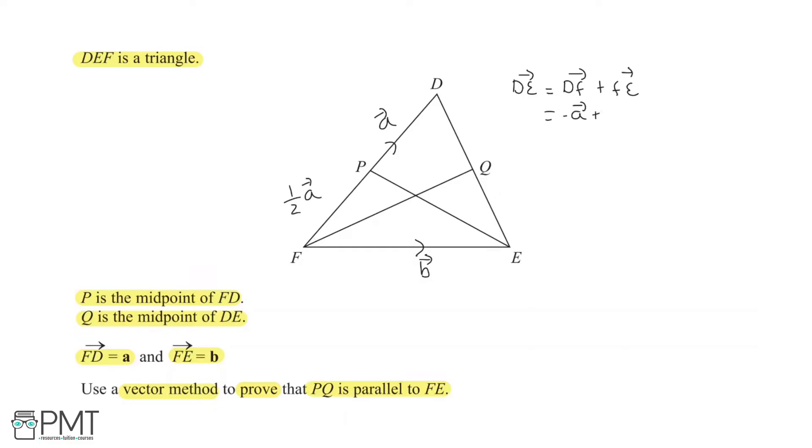Plus FE. Now, FE is the same direction, so this is just B. And writing it more neatly, we can get this as B minus A. Because that's nice.